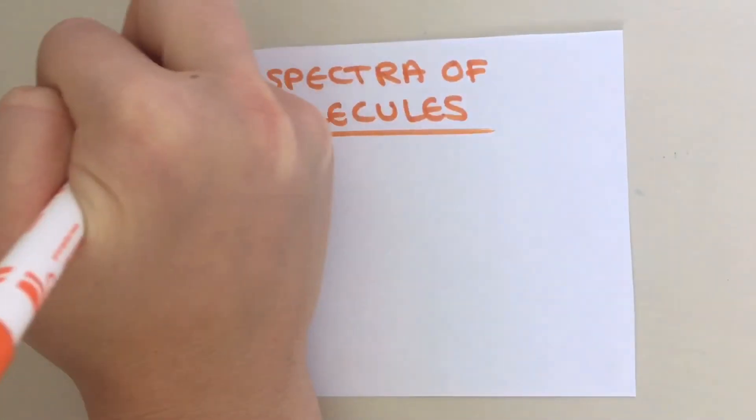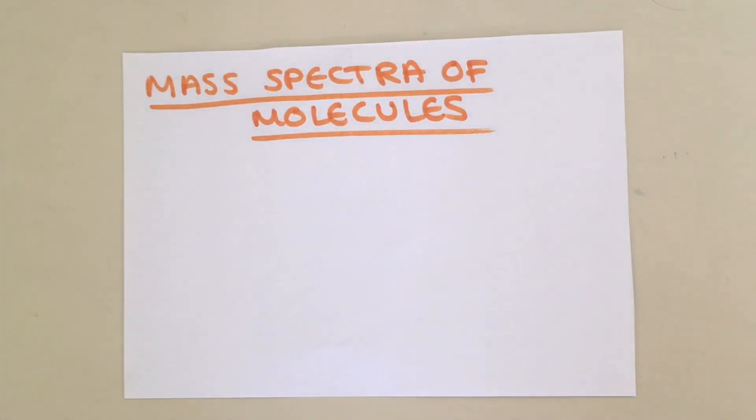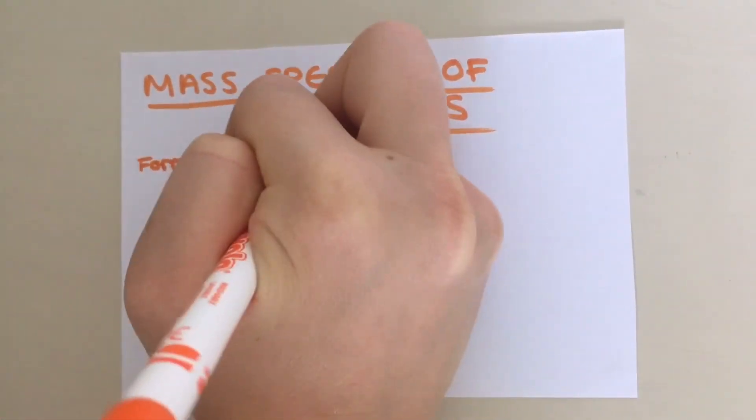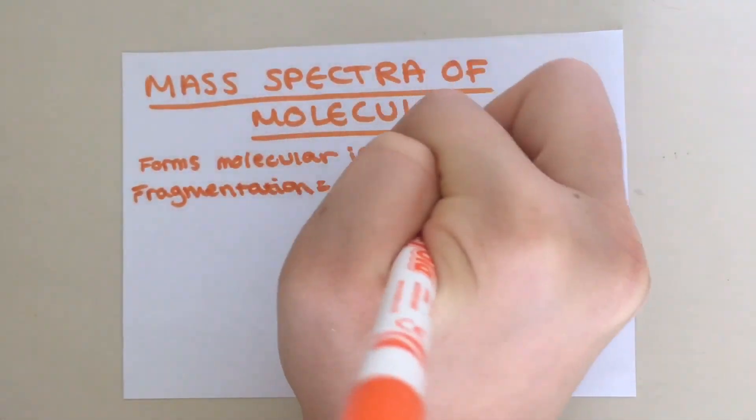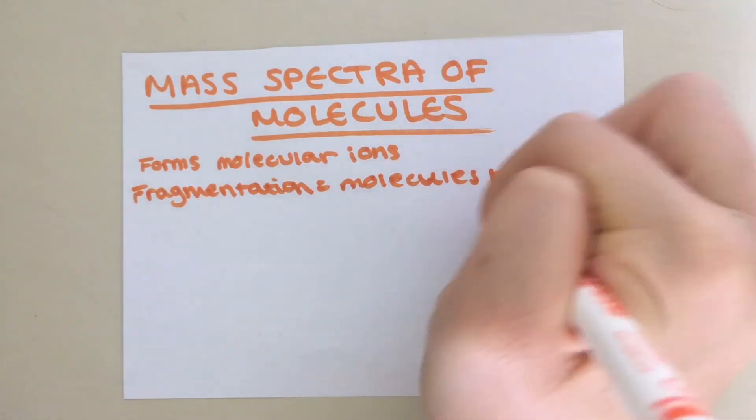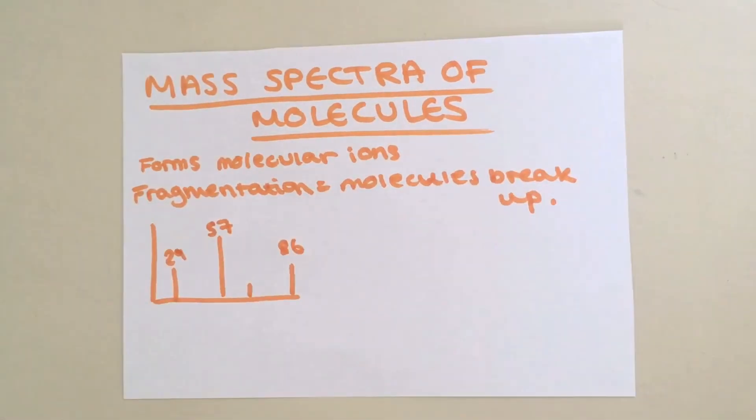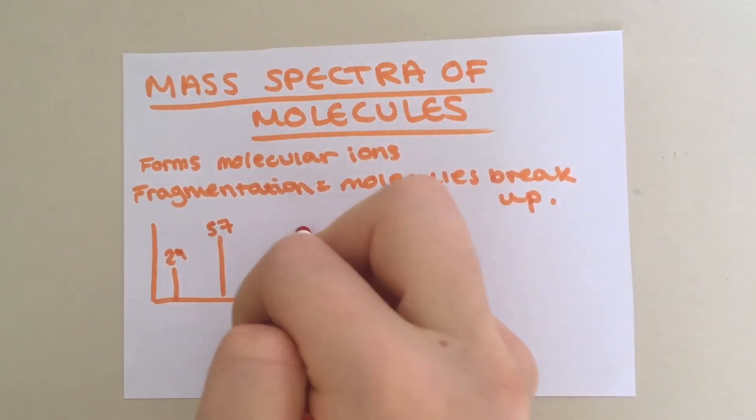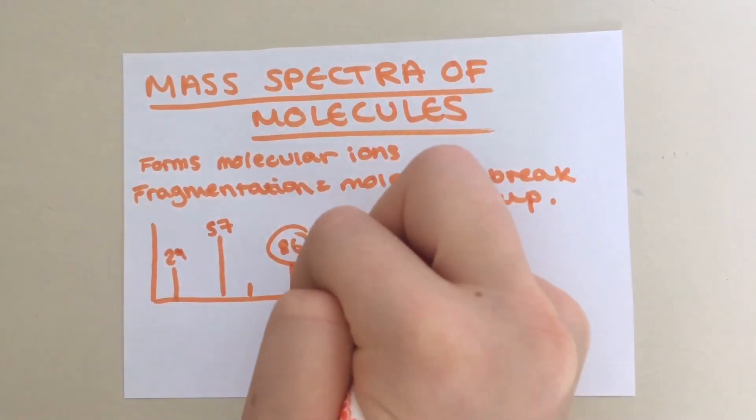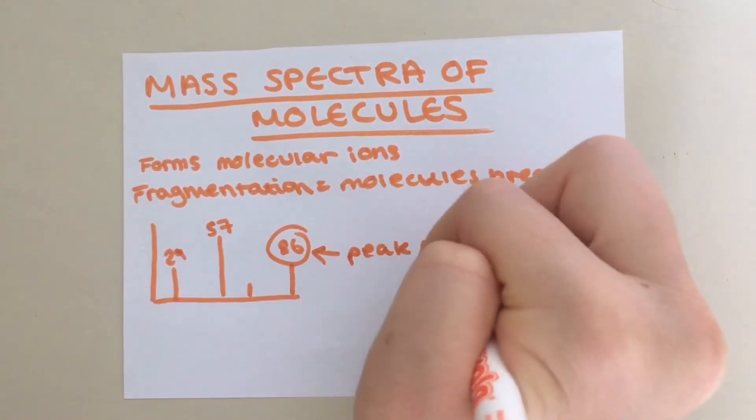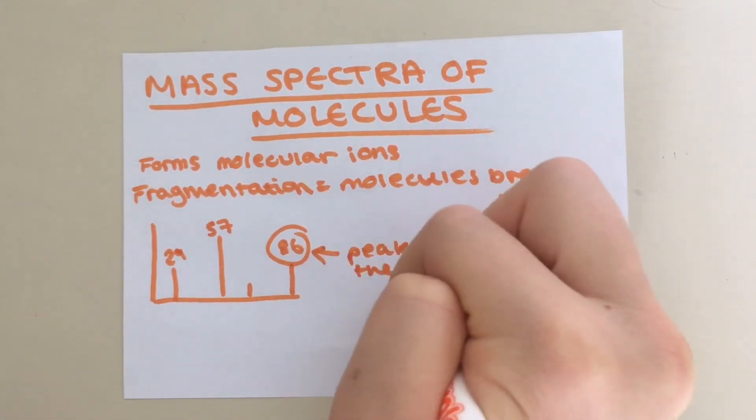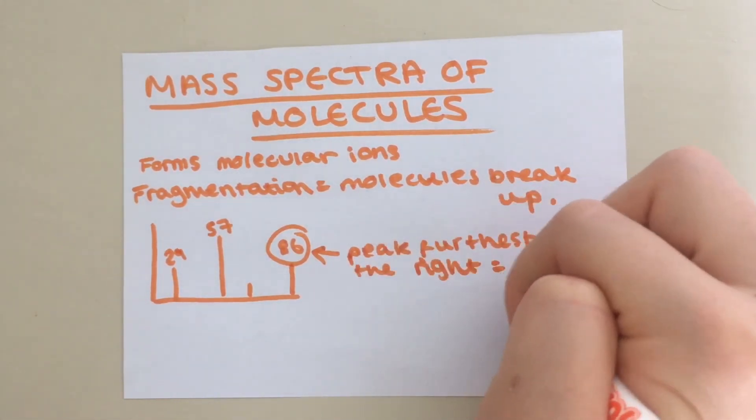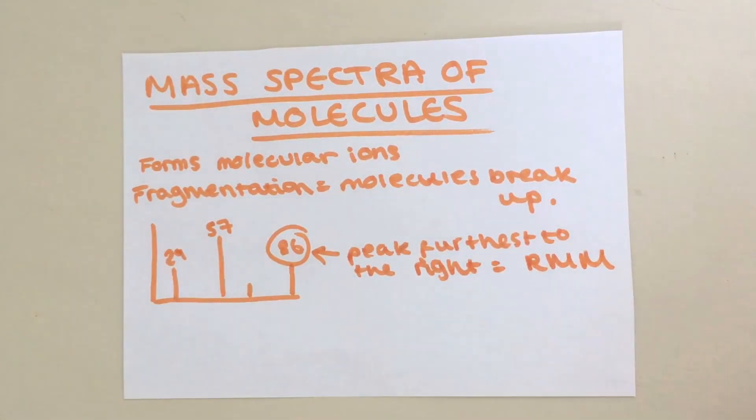As well as atoms, you can also place molecules in a mass spectrometer. An ion will be knocked off the molecule, forming a molecular ion. Sometimes something called fragmentation can occur, where the molecule splits up into atoms. This will result in much smaller, unexpected values on your mass spectra. To find the true relative molecular mass of your molecule, look at the highest m over z value, or the peak furthest to the right. This is not the same as the tallest peak. All the other peaks in this diagram are either due to isotopes or other fragments.